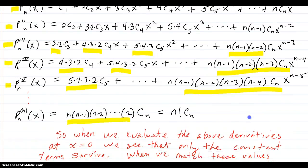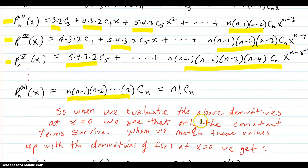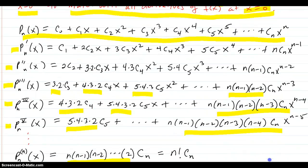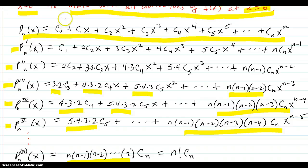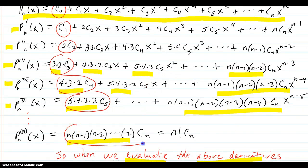So when we evaluate the above derivatives at x equals zero, we see that only the constant terms survive. When we evaluate zero, it knocks off all these terms. Anything that has an x gets zeroed out. Those are all the survivors.